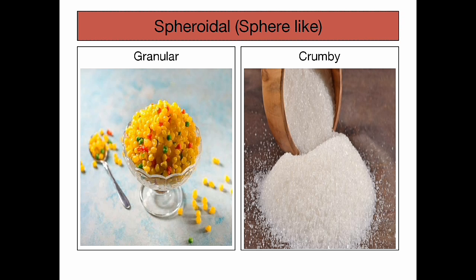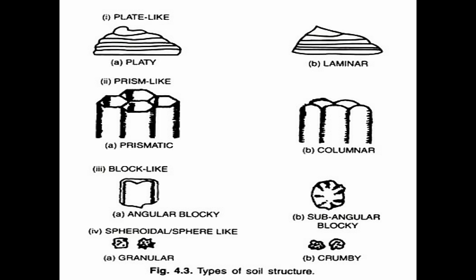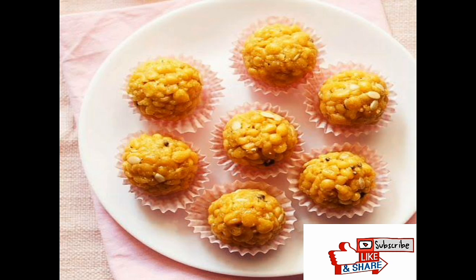The last type is spheroidal. It is classified into two types: if the arrangement of soil particles is relatively less porous — like boondi — it is granular; and if it is very porous — like sugar — it is crumby. Don't forget to like, share, comment, and subscribe to Lead and Learn Agriculture. Thank you!